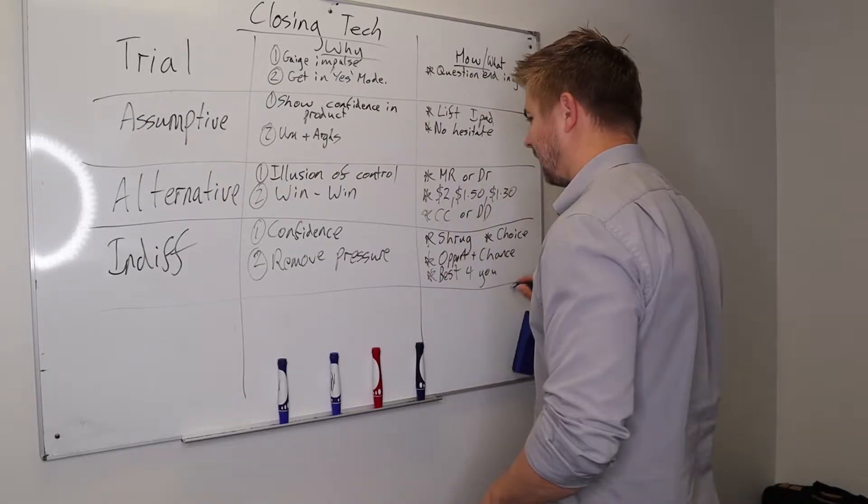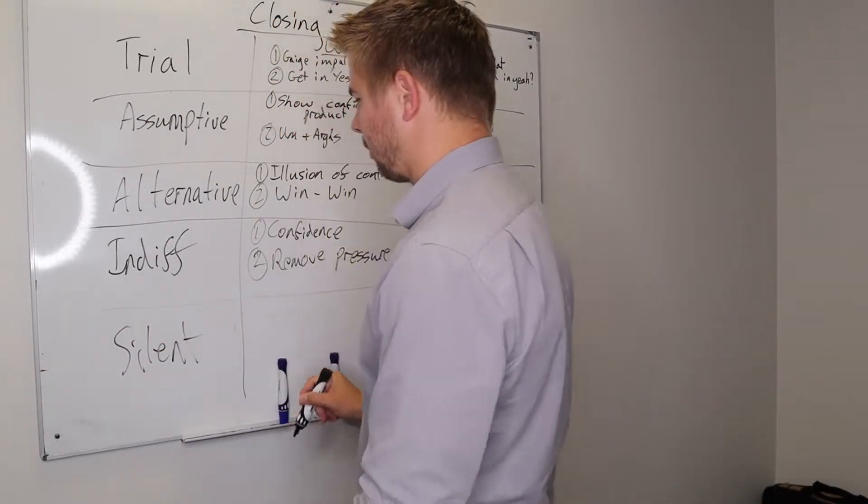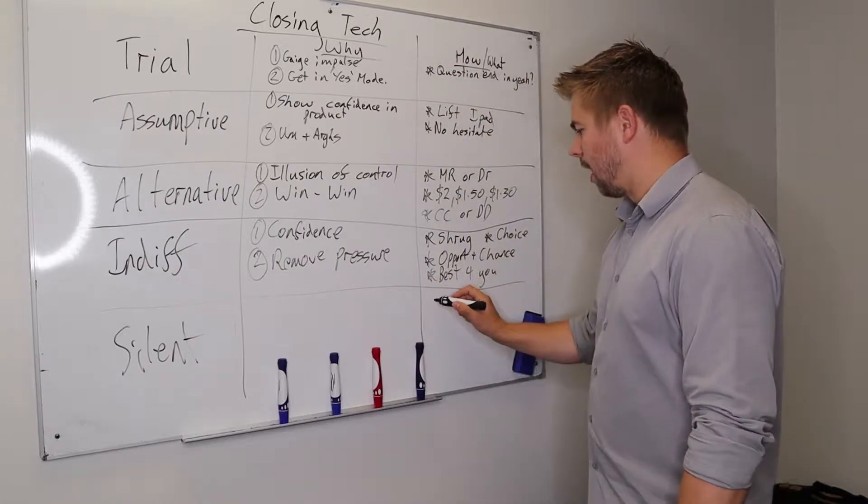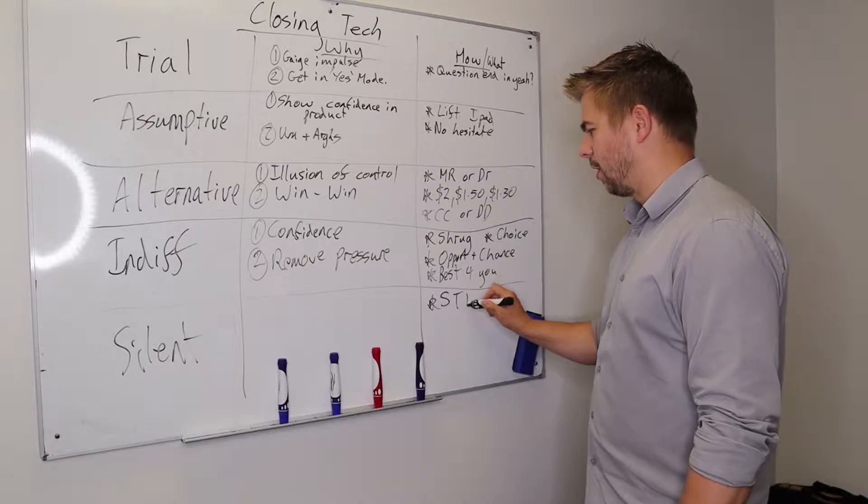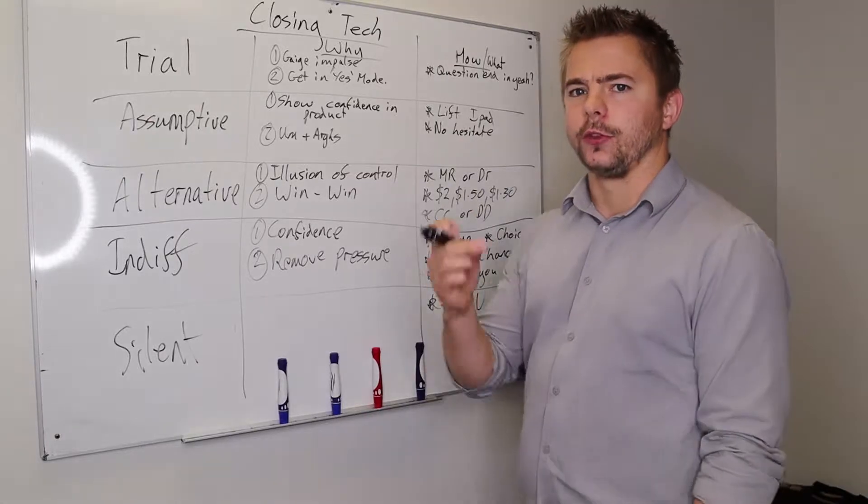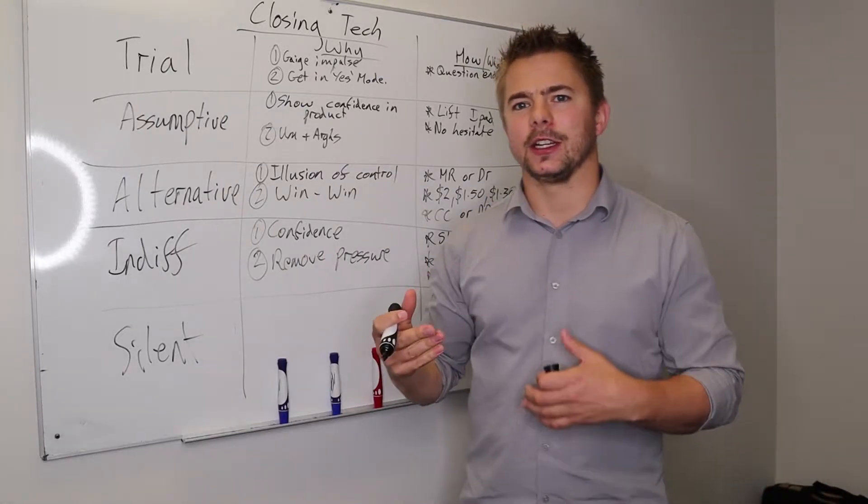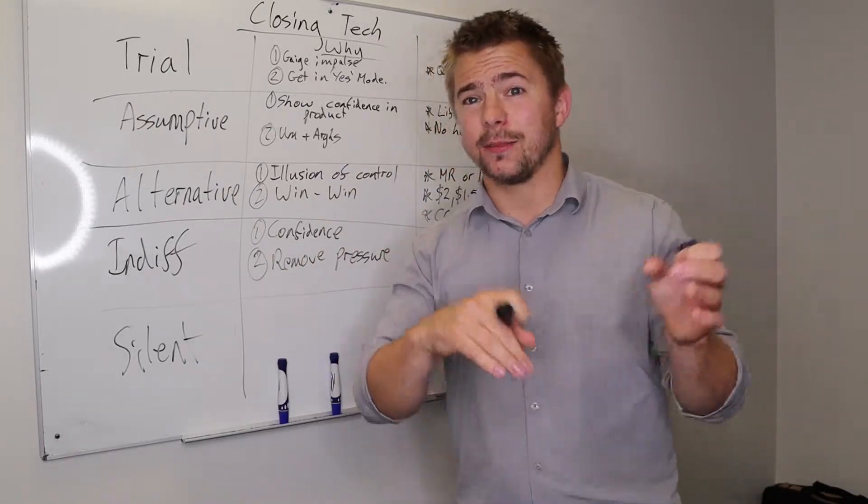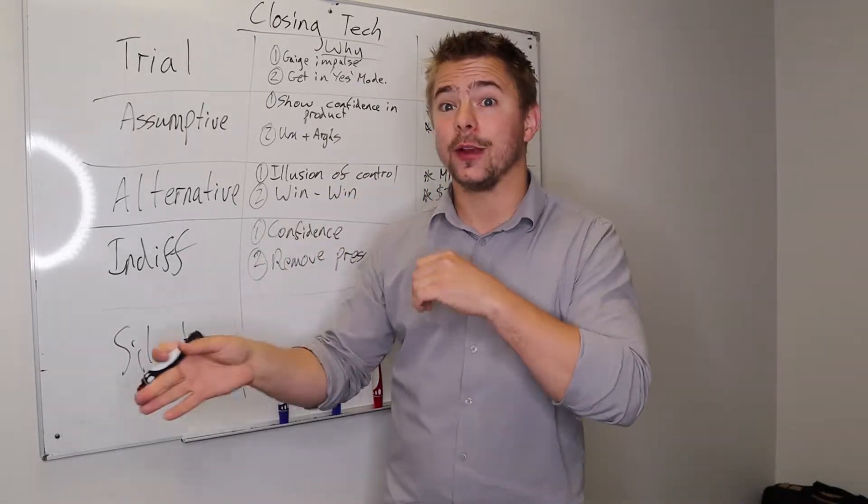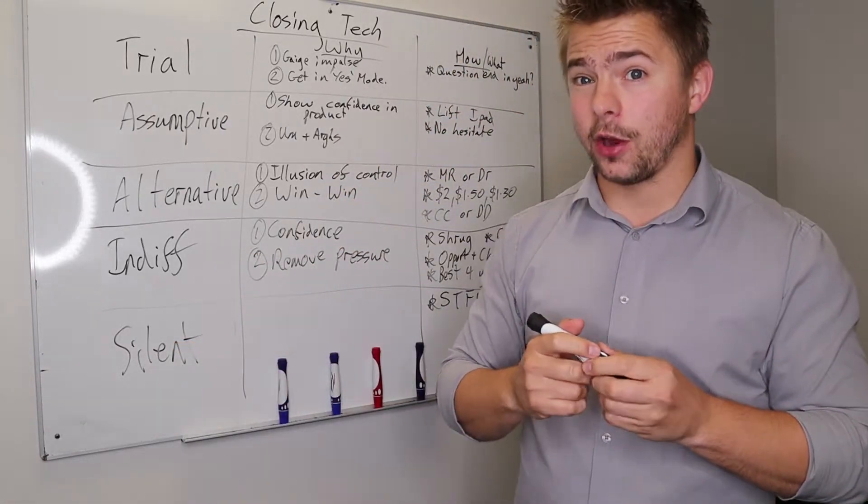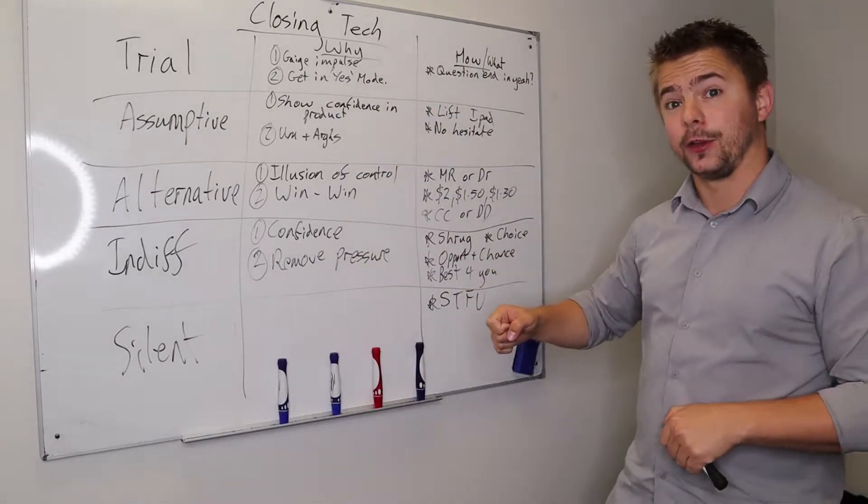And last but not least, is a silent close. So with the silent close, it's basically any type of phrase where you're just shutting the fuck up. So once you've done your close, you go silent. Even if, for example, in your presentation, there was one or two bits that you wanted to mention, maybe the tax back. Maybe if you wanted to talk about, if you're selling a car, if you want to talk about the extra features or deals that can be done there.